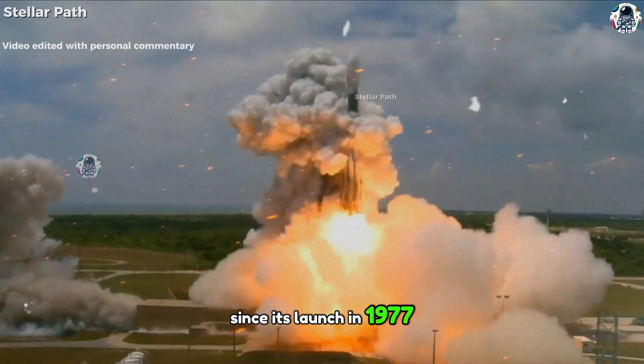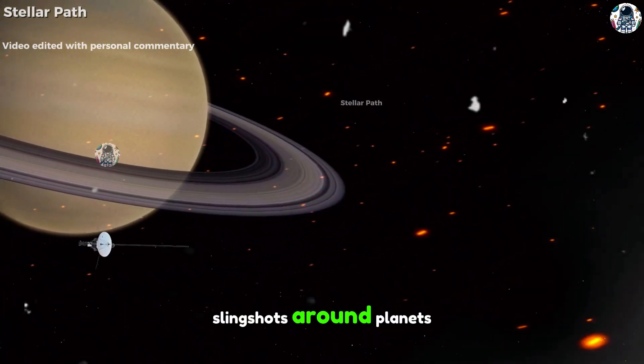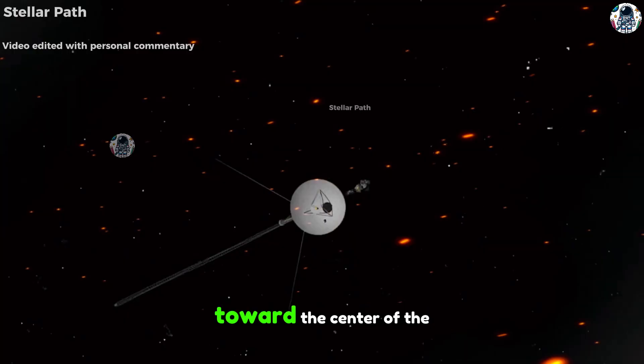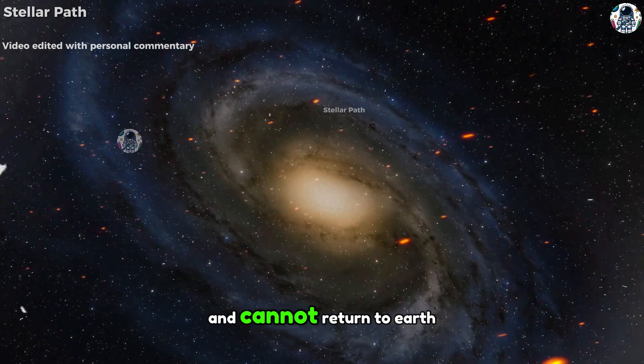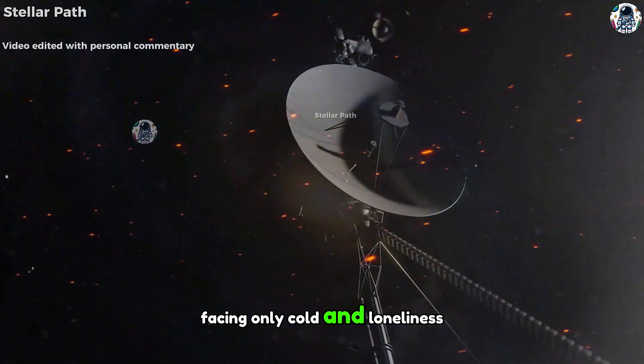Since its launch in 1977, Voyager 1 has used gravitational slingshots around planets to accelerate. It's now heading toward the center of the galaxy and cannot return to Earth, facing only cold and loneliness.